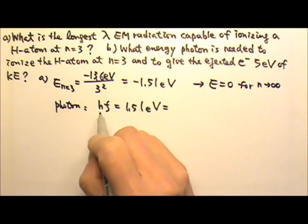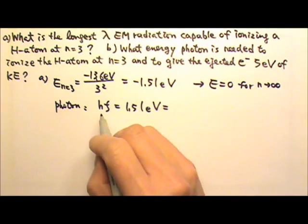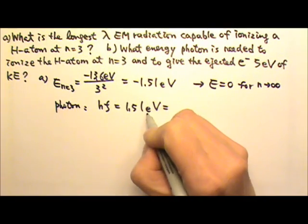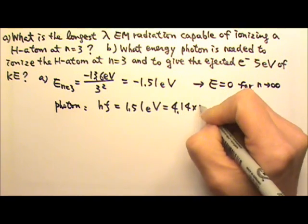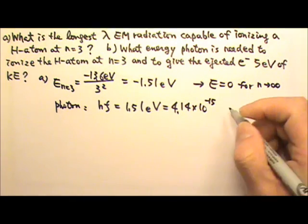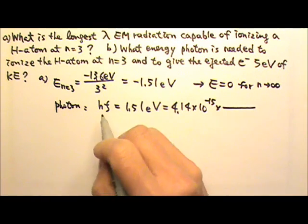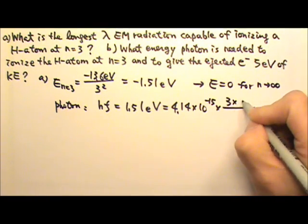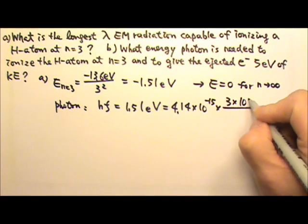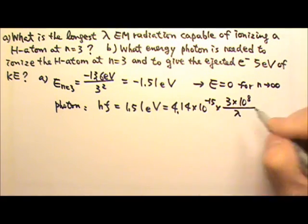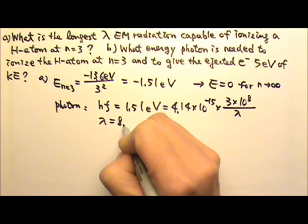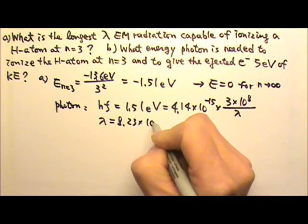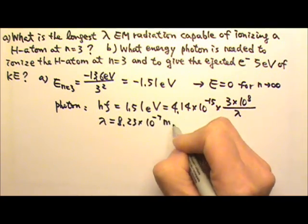And we need to find the wavelength. Since this is in eV, we use h equal to 4.14 times 10 to the negative 15th, times frequency equal to c over lambda, which is 3 times 10 to the eighth meters per second divided by the wavelength. Solving for the wavelength, we get 8.23 times 10 to the negative 7th meters.